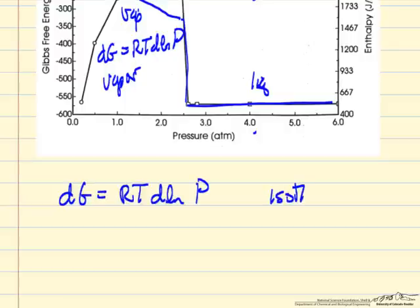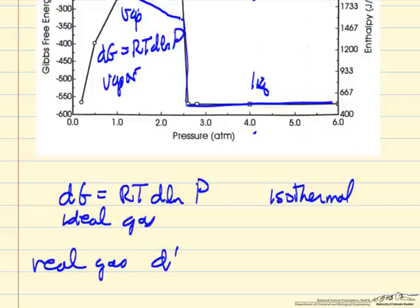That's ideal gas. If it's a real gas, then we introduce another variable that tells how Gibbs free energy changes for gas, and that variable is fugacity instead of pressure for real gas. So we can relate fugacity to Gibbs free energy.